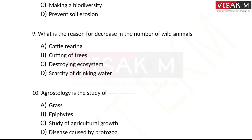Next question: what is the reason for the decrease in the number of wild animals? Options: A) cattle rearing, B) cutting trees and deforestation, C) destroying ecosystem, D) scarcity of drinking water. The right answer is option C — destroying the ecosystem is the main reason for the decrease in wild animals.